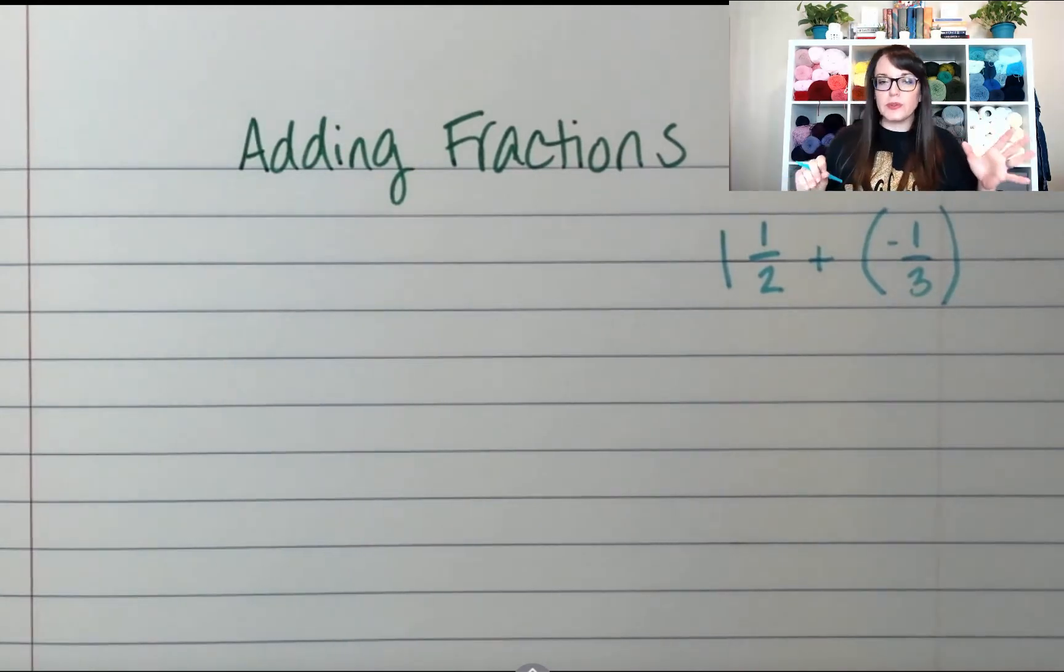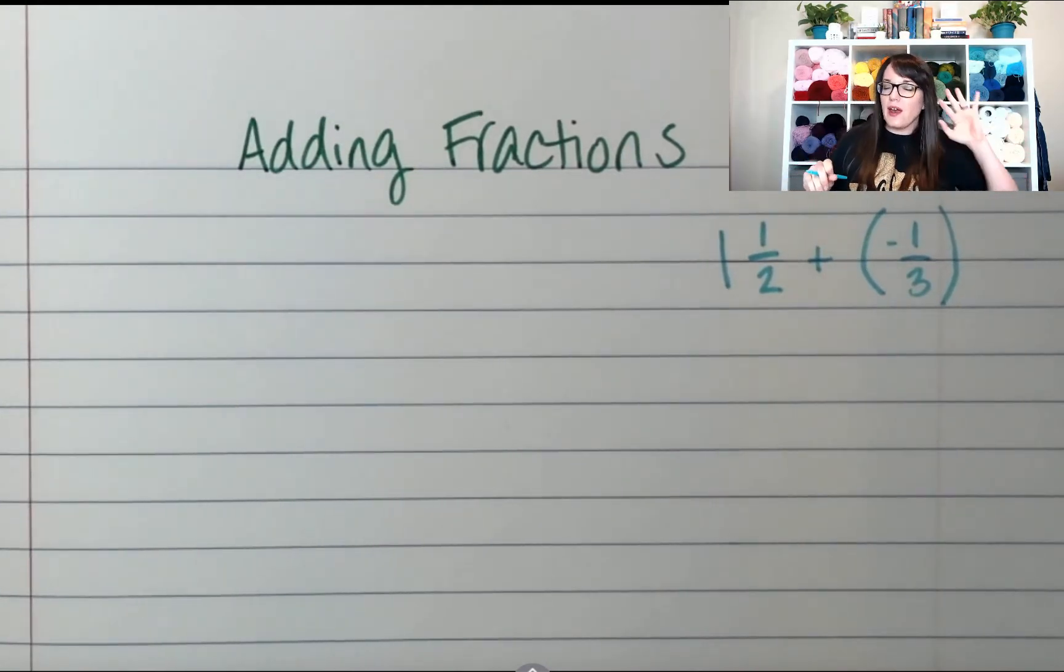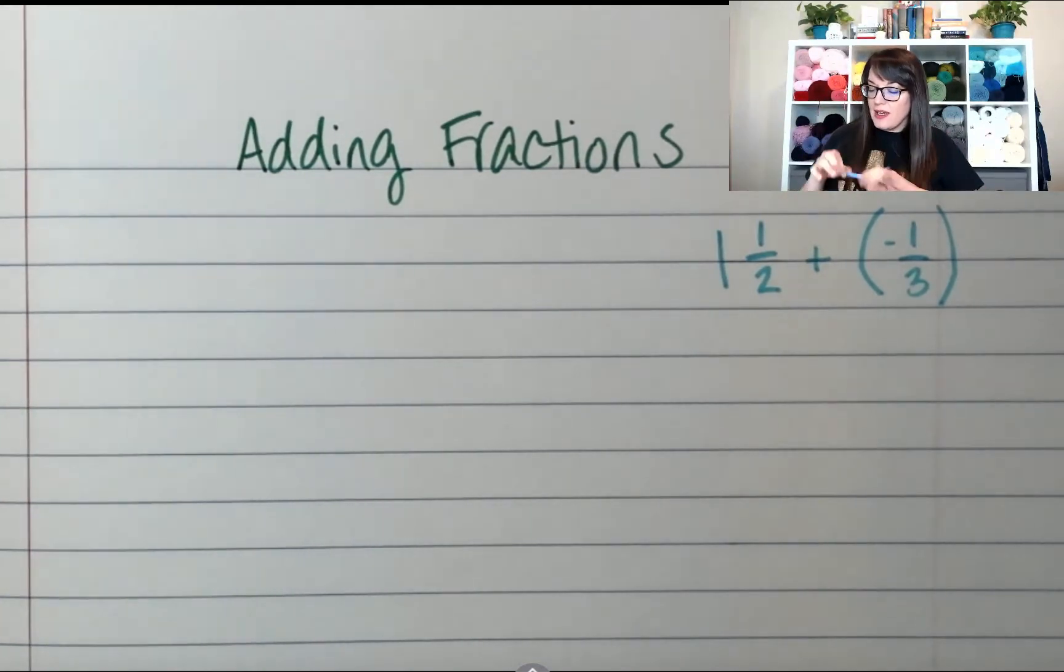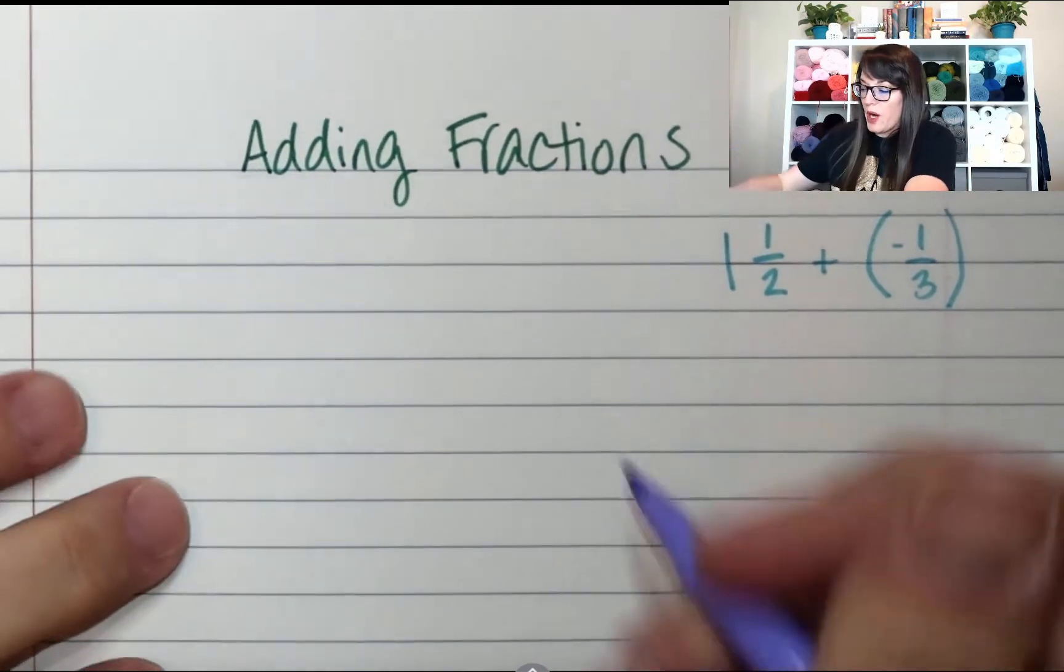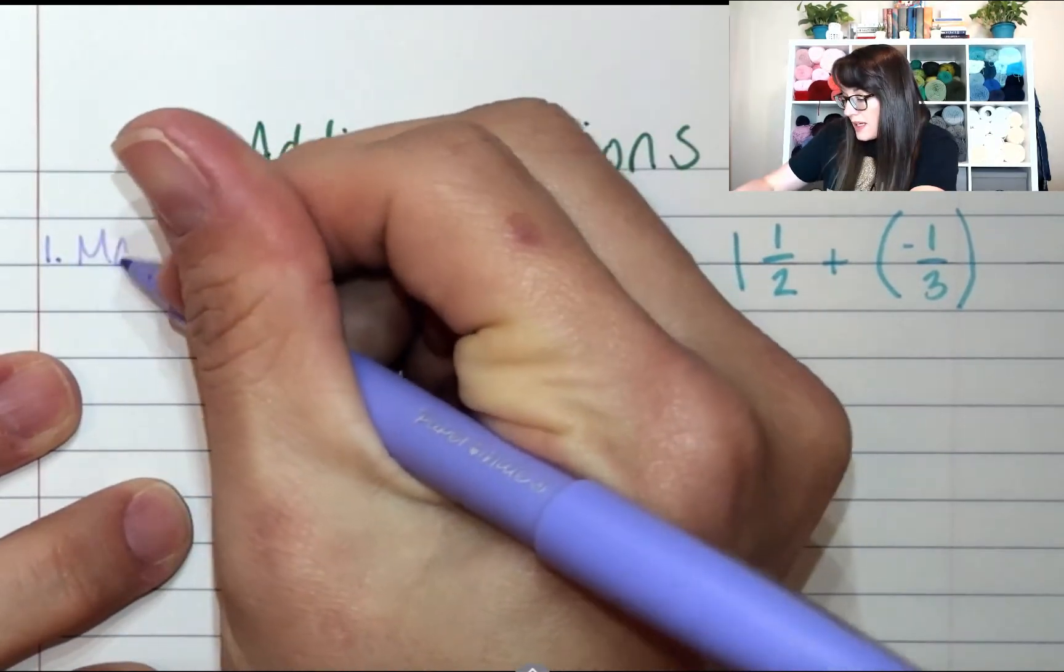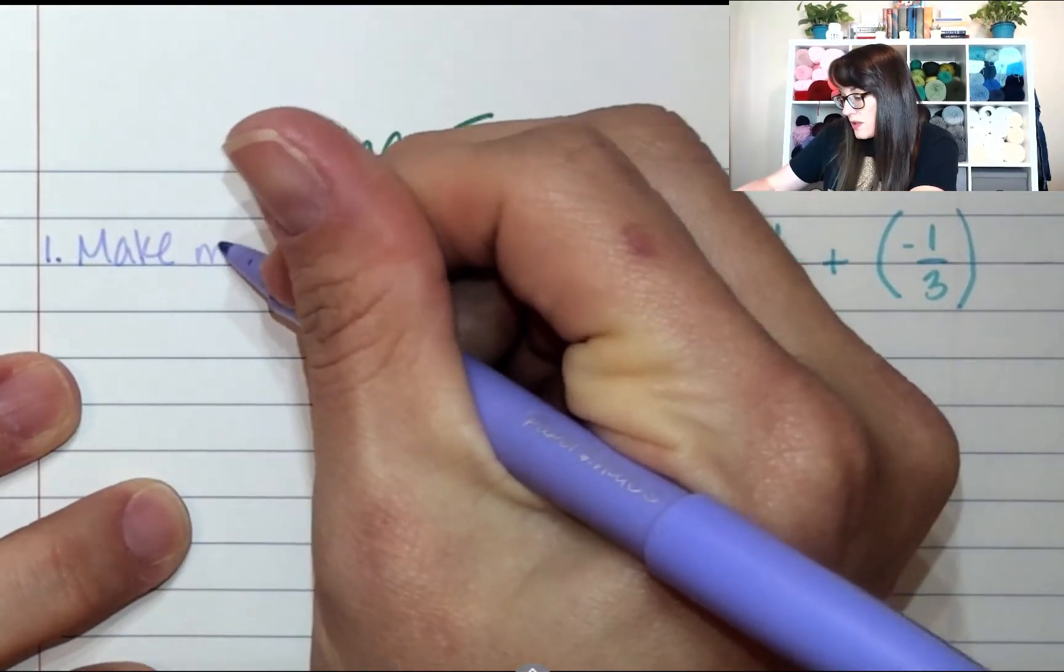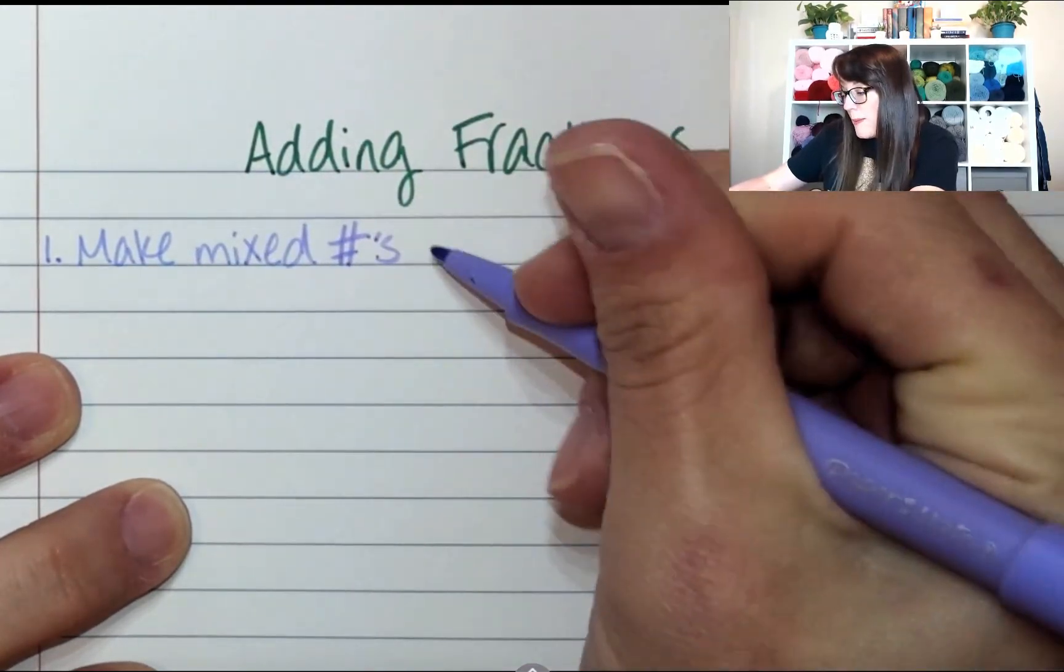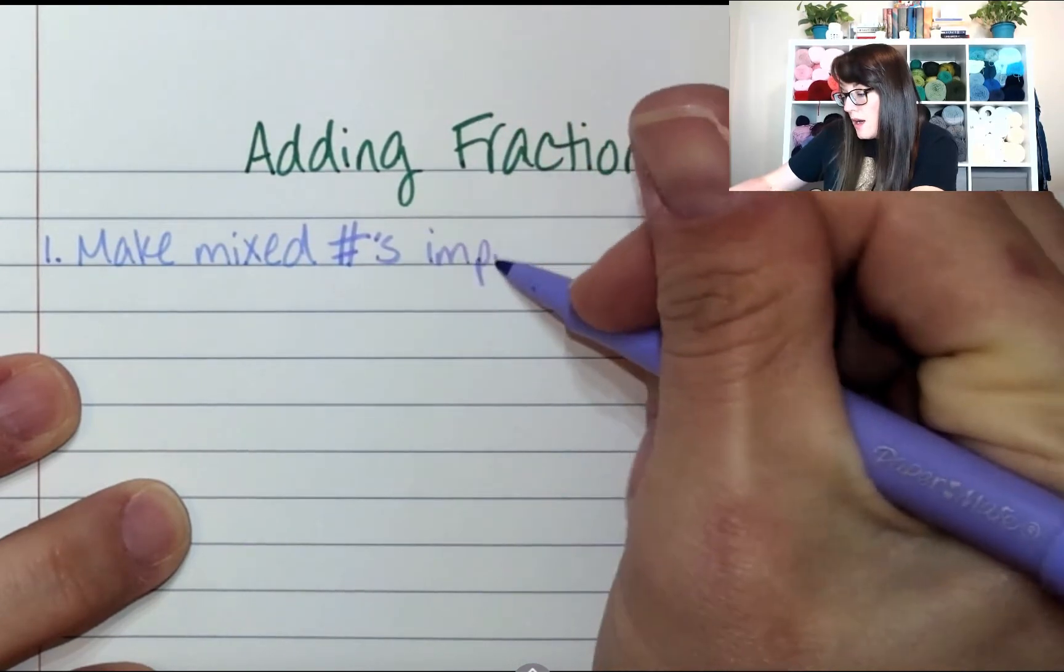We're gonna take all of the rules about integers and all the rules that we kind of used with decimals and we're gonna kind of morph it into work with this stuff. So, the first thing I want to do, and I tell you this because it works every time and you'll never go wrong, we're gonna make these fractions improper. Step one, we're going to make mixed numbers improper.